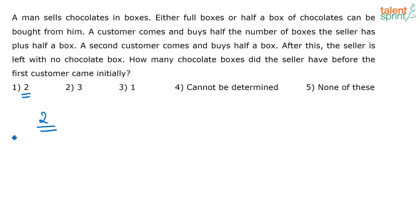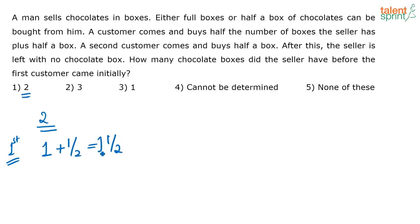Initially I had two boxes. The first customer comes. He buys half the number of chocolate boxes — half of two is one — plus another half a chocolate box. So he is buying one and a half boxes in total.